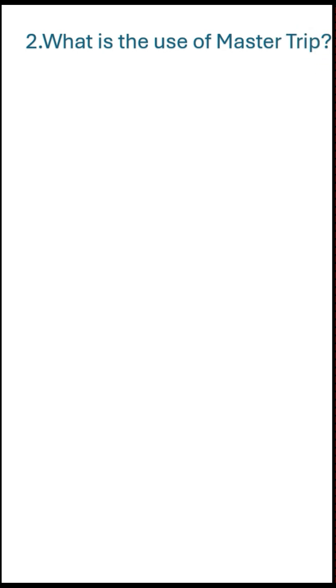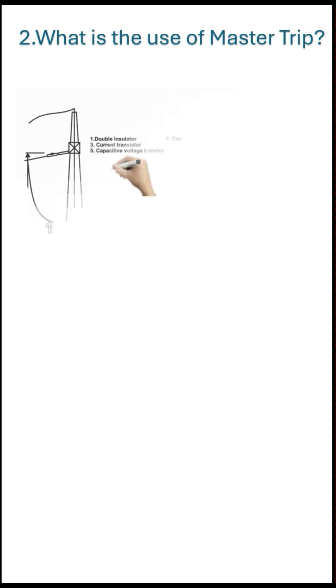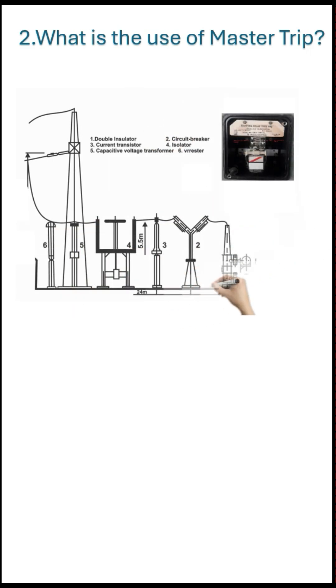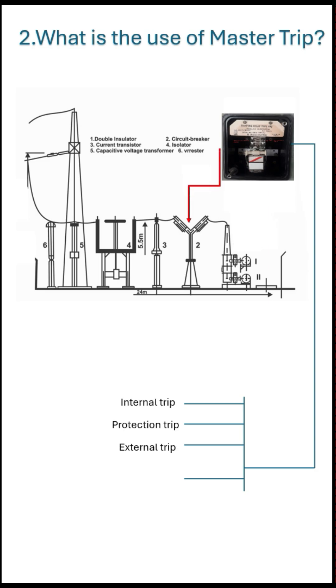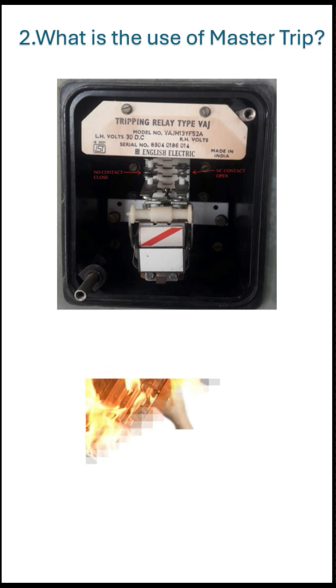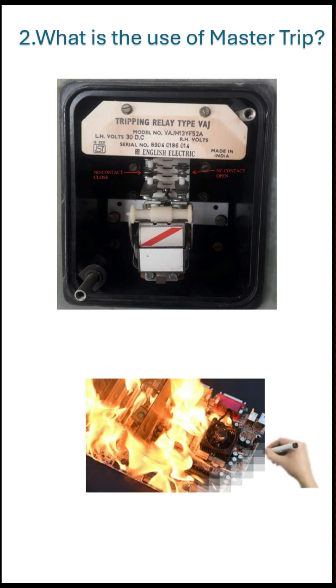The second question: what is the use of master trip relay? As we know, it collects all the tripping signals and gives a single tripping command to the circuit breaker. Point number 1: it isolates the protection system from the breaker circuit coil, since the breaker coil has a high current during operating time which may cause burning to the numerical relay contact. So it protects the numerical relay from damage.